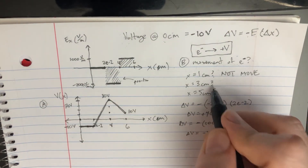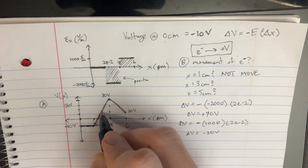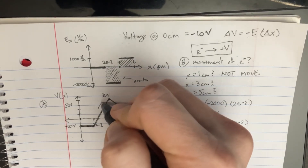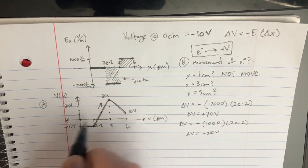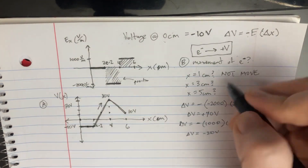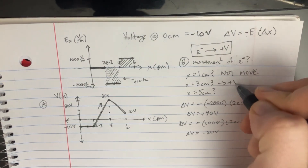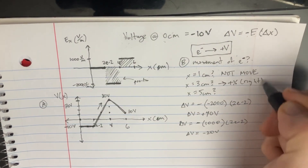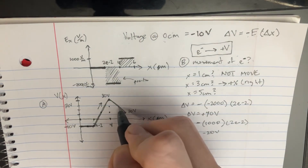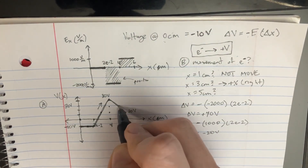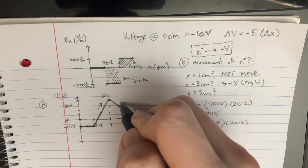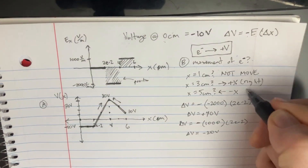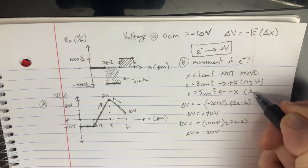But if we go to the 3 centimeter mark, notice that it wants to move this way — it wants to move to the right, so positive x to the right. And if we were over here at 5 centimeters, then it would want to move toward the higher potential, so this one will move left on the x-axis.